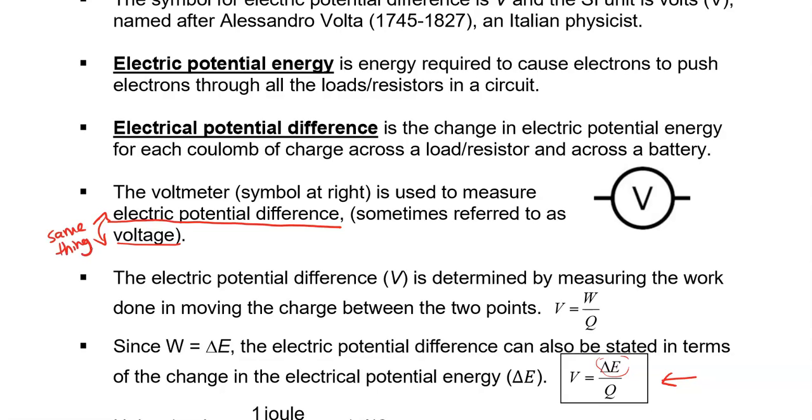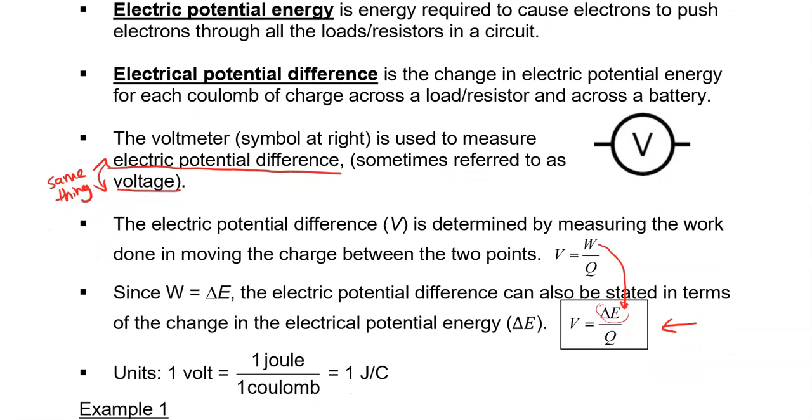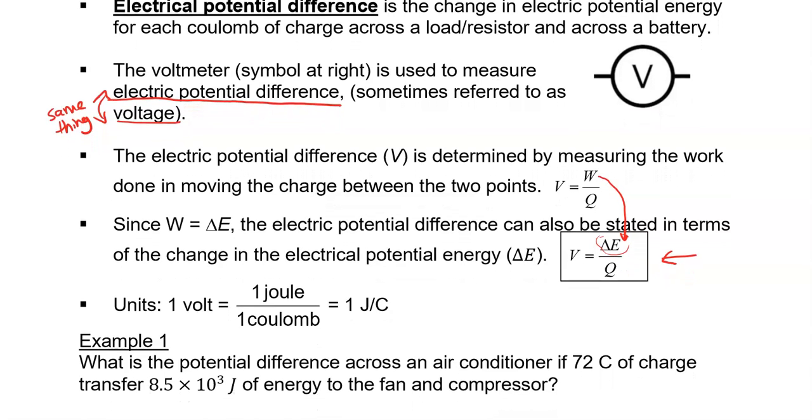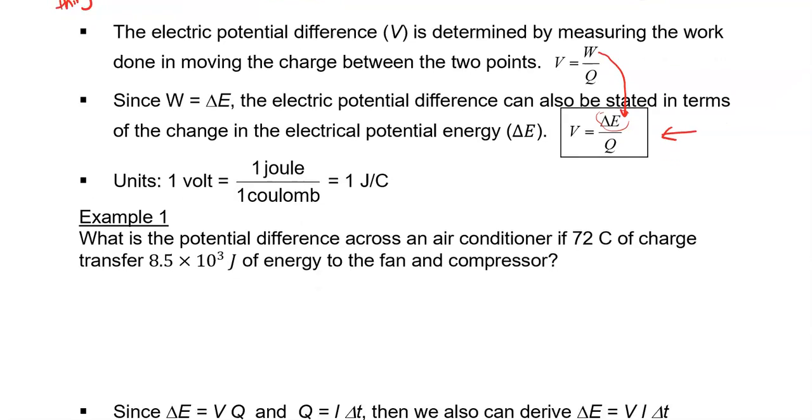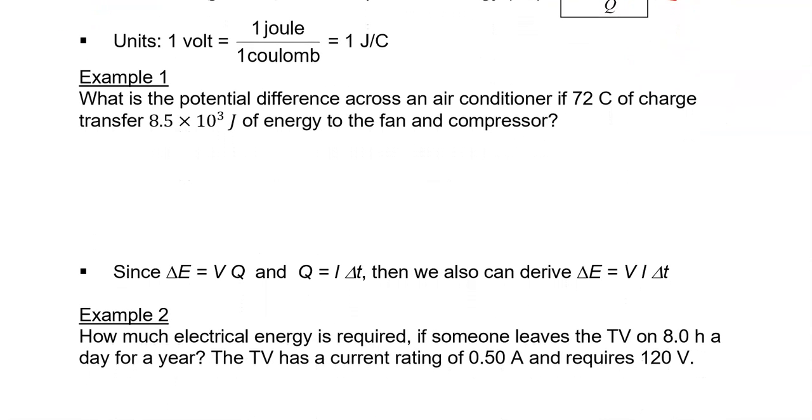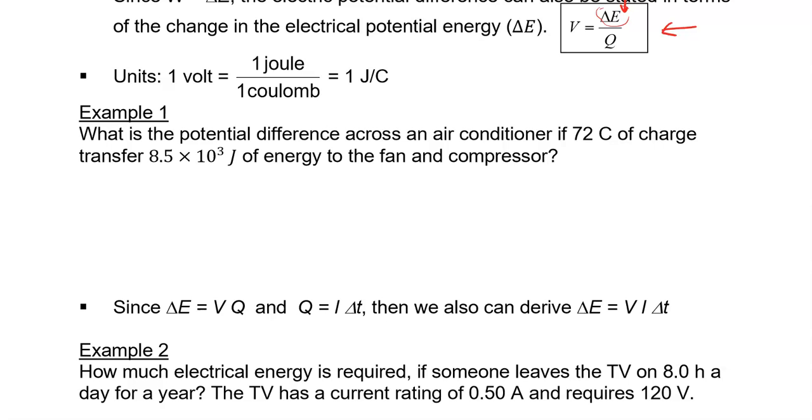The electric potential difference is determined by measuring the work done in moving the charge between the two points. And we know that work is the change in energy. So we can write that as the change in energy divided by the charge. Now, the units, I already alluded to these, but the units are going to be one joule per coulomb. Because energy is in joules and charge Q is in coulombs. And that's one volt. So let's look at two examples and see how this works as we just do some of the math. And then we'll go back to the circuits and have a look at what this actually means.